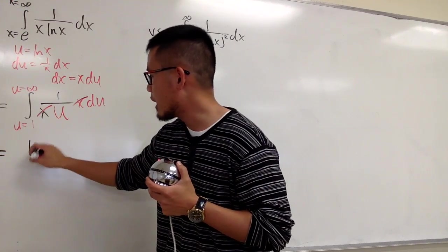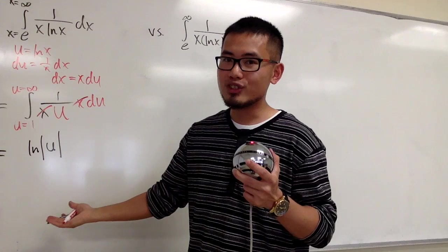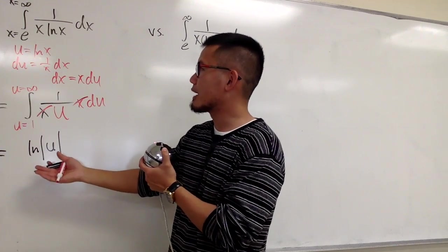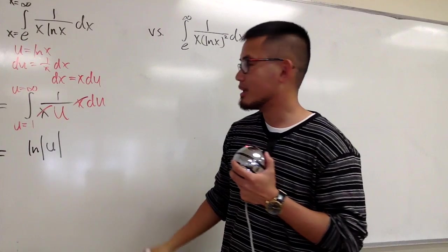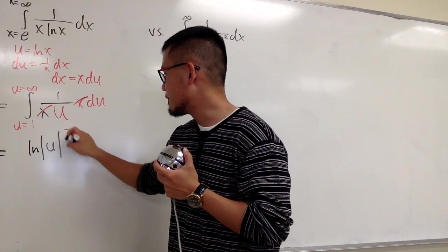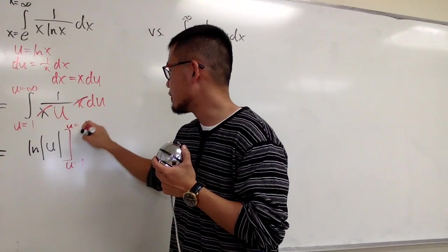And all I have to do is integrate 1 over u in the u world. And the answer for that will be ln absolute value of u. I finish with my integration. And I don't want to change that back to the x world, because I can just finish everything in the u world.